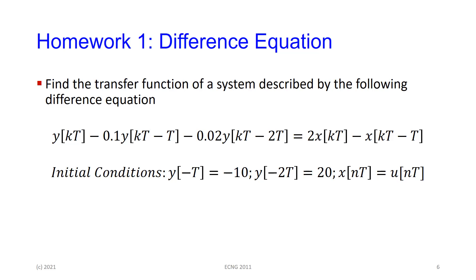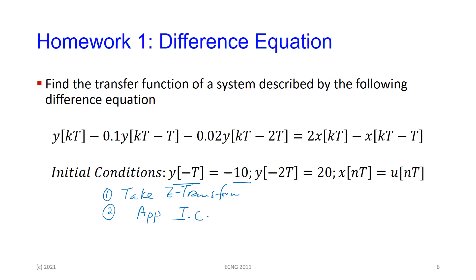This one was an example — how, if I give you a difference equation, what is the transfer function of the system described by this? The steps: one, take the Z transform; two, apply the initial conditions. They give you that X and T is the unit step, so X at minus T, X at minus 2T, et cetera, will all be equal to zero. So you apply the initial conditions.